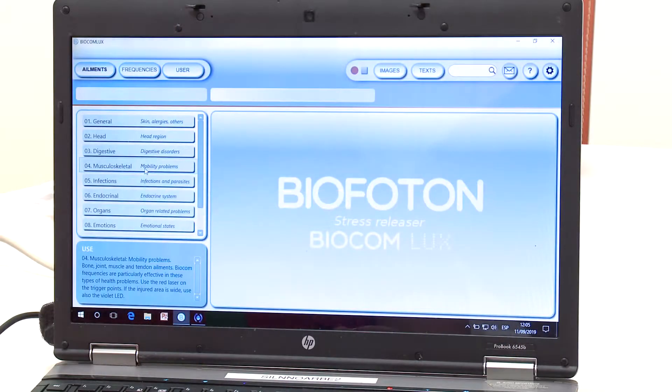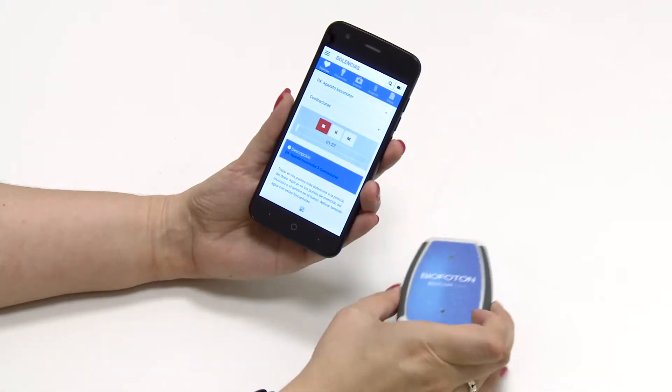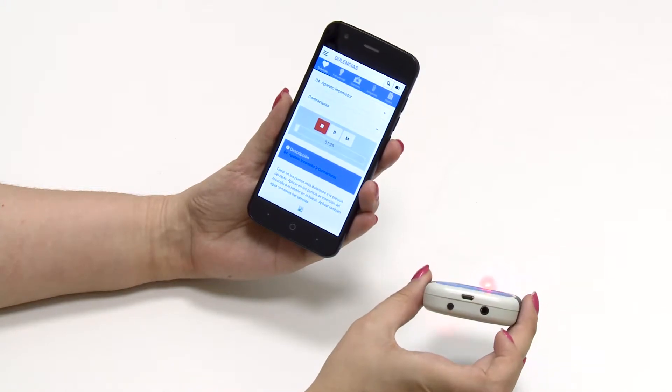The bio-communicator is an equipment composed of software which includes a list of frequencies and an explanation how to use them. It also contains a microcontroller which emits frequencies and light emitters.